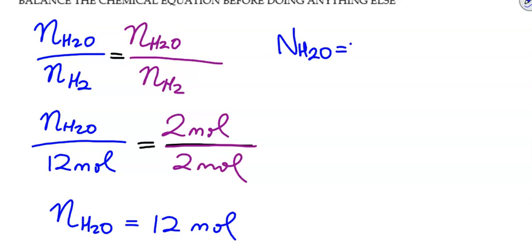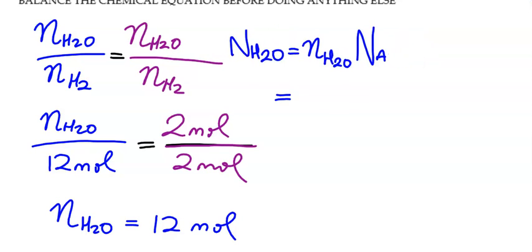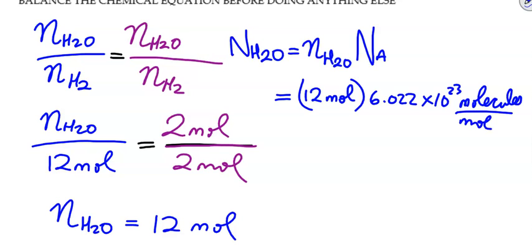So N of H2O is little N of H2O times Avogadro's number. I'm going to move this over a bit. 12 moles times 6.022 times 10 to the 23 molecules per mole. So N of H2O brings us to 7.2, and that's fine if you just went to two significant digits, because we had 12 moles there.